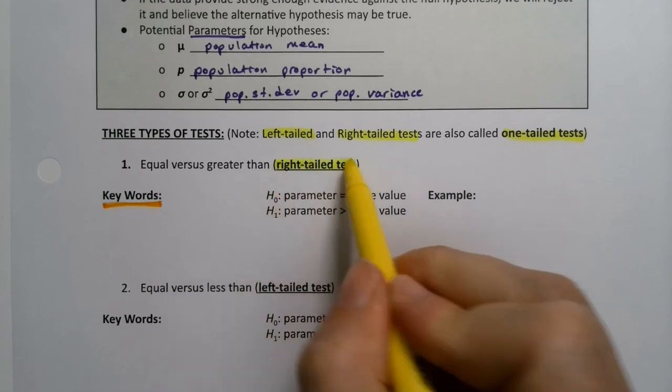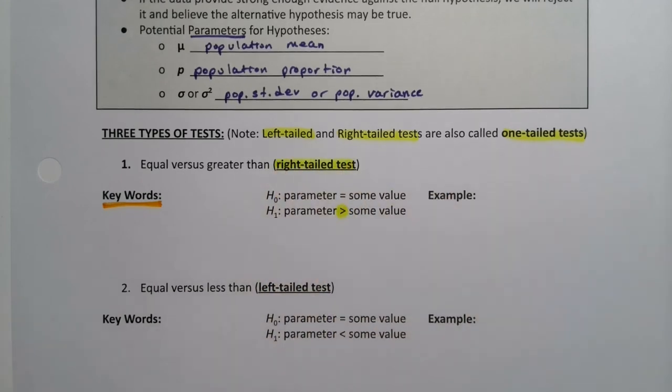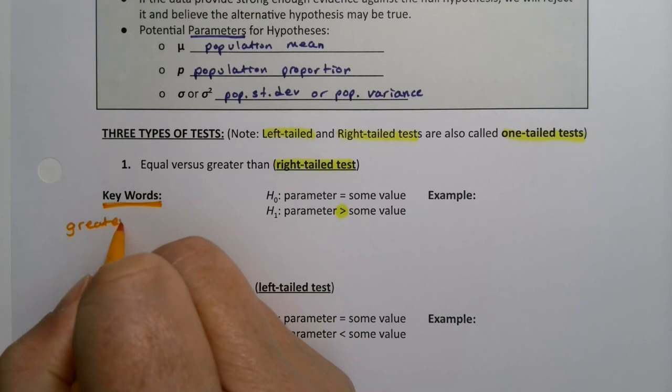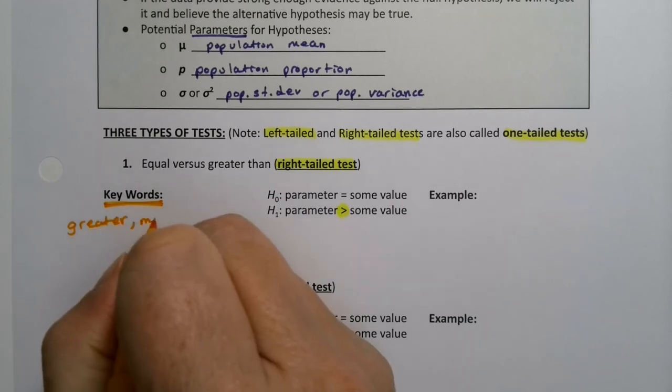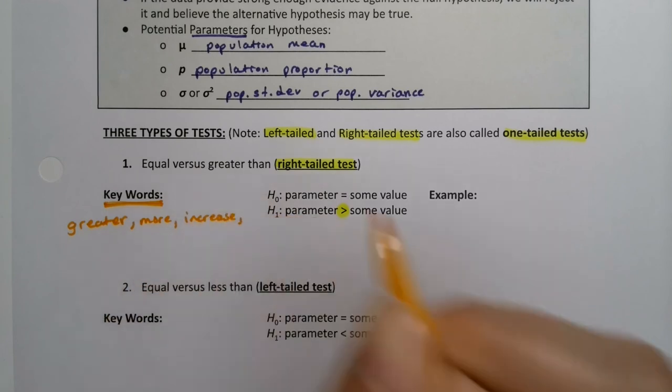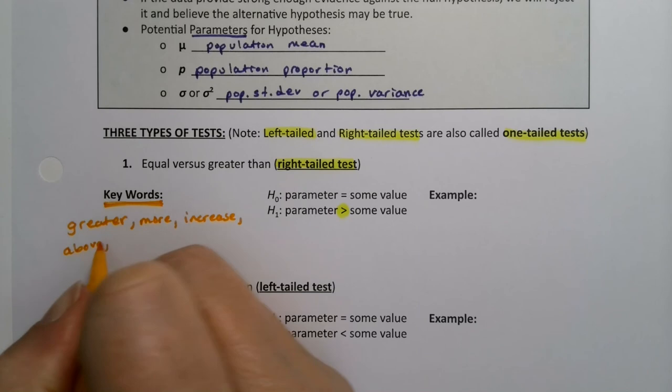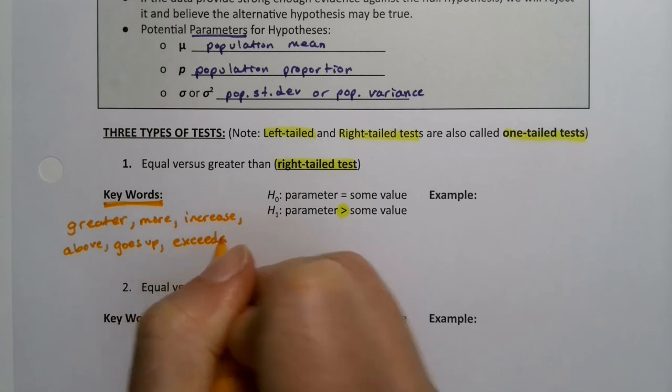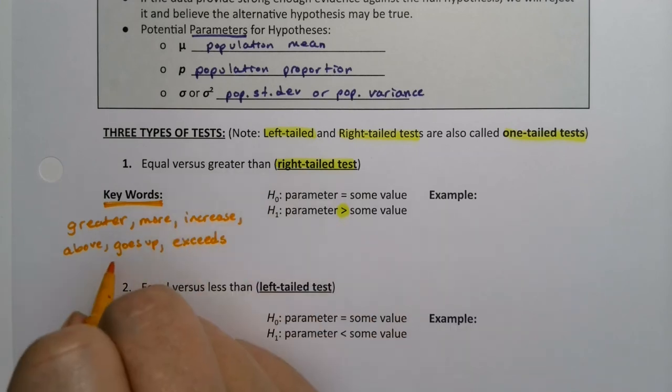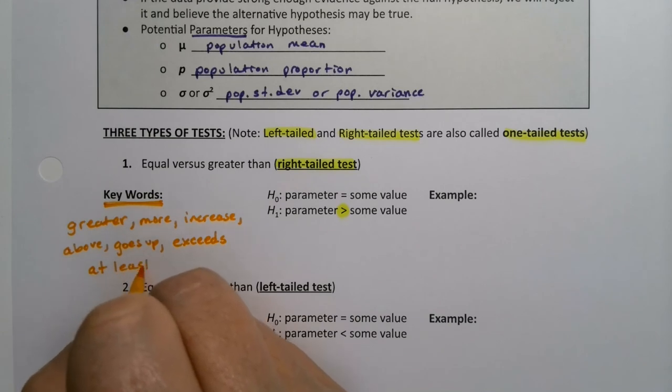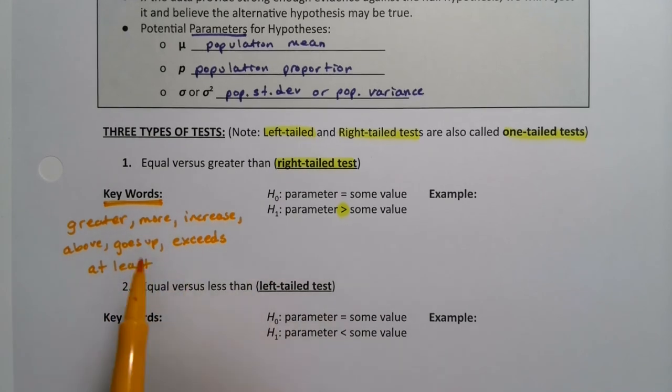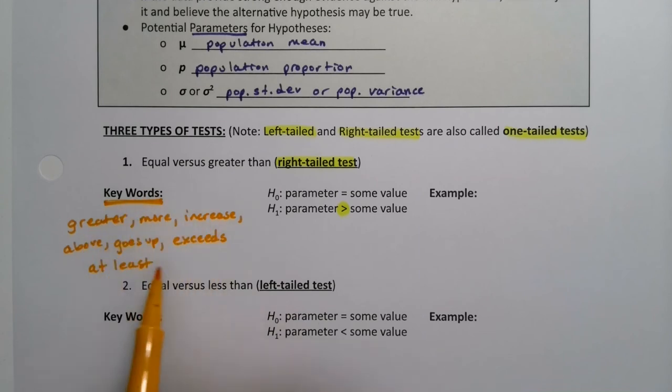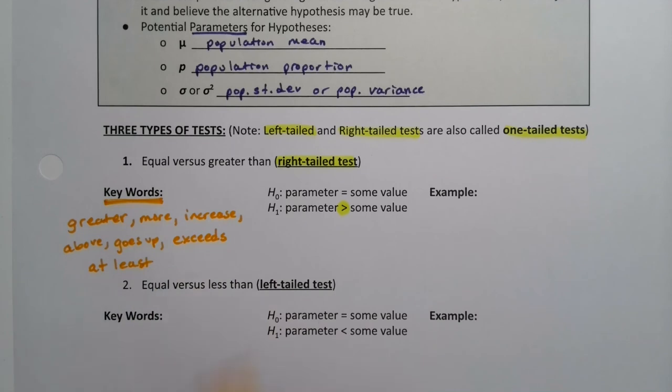A right-tailed test has that second symbol as greater than, of course. So greater would be a good word to look for. Keywords include: greater, more, increase, above, goes up, exceeds, and at least. At least this much means it's greater than. Obviously you can add to this. This would be the kind of thing you would put on your note sheet, and as you run into more problems, you can add to your keywords for greater than.